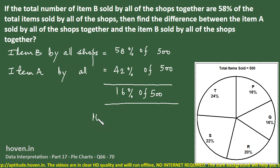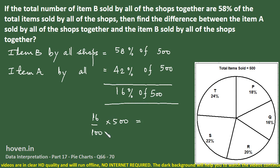Just subtract 58% and 42% will give me 16% of 500. We can write it as 16 by 100 into 500. This gives 16 into 5, which is 80, which is the required answer.